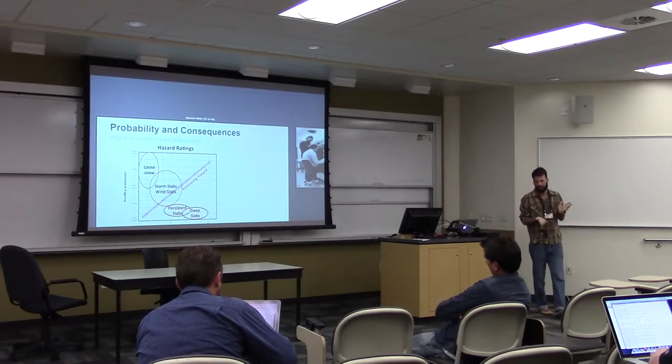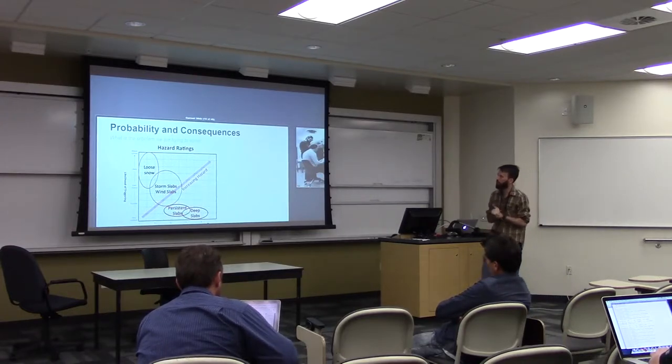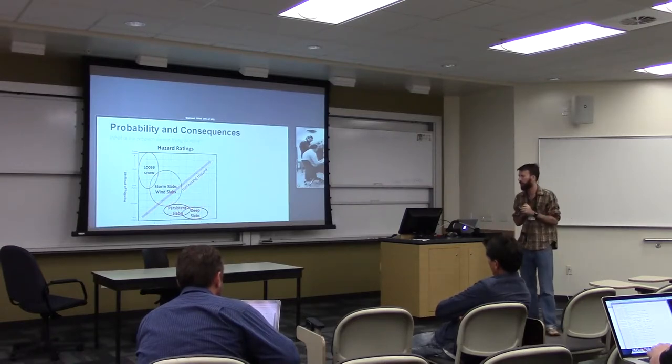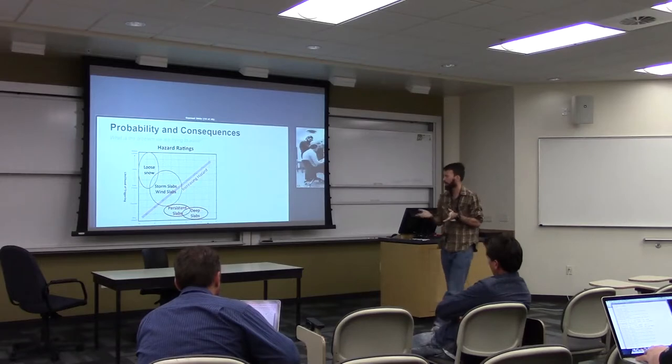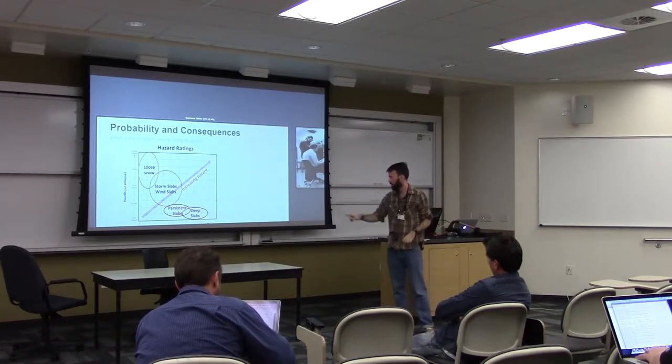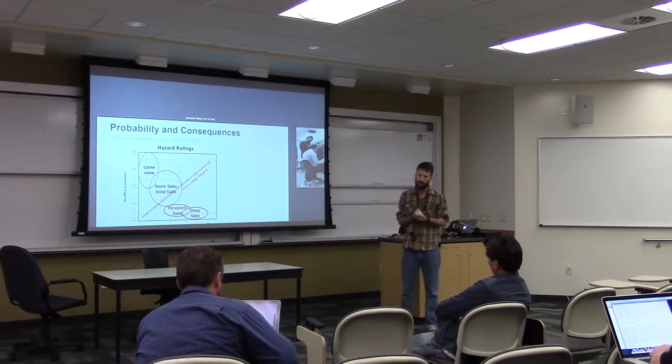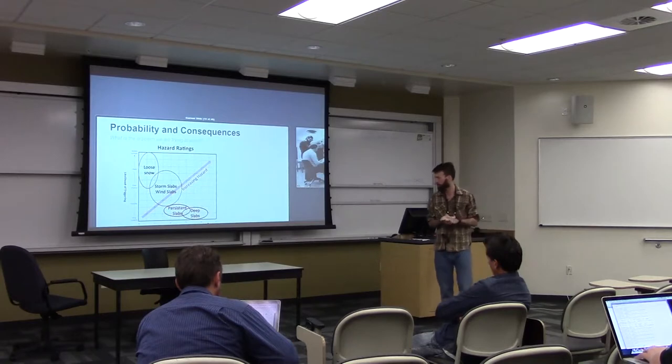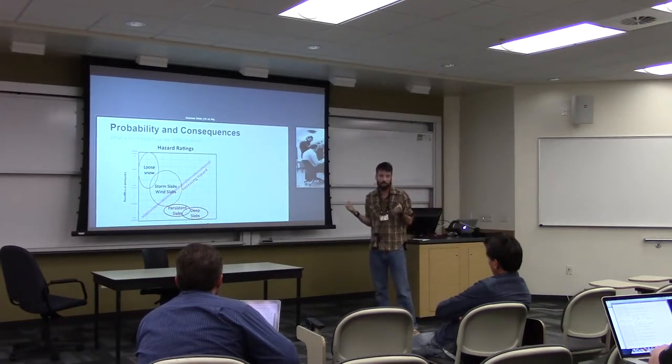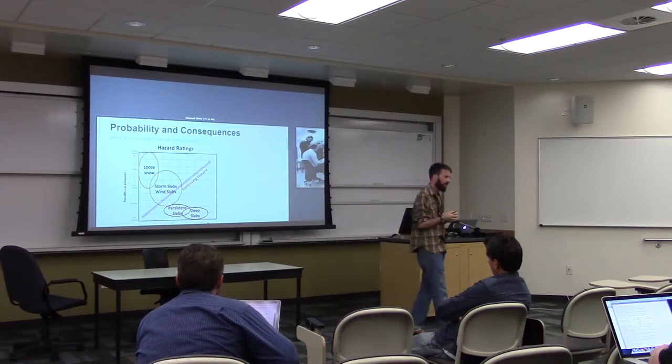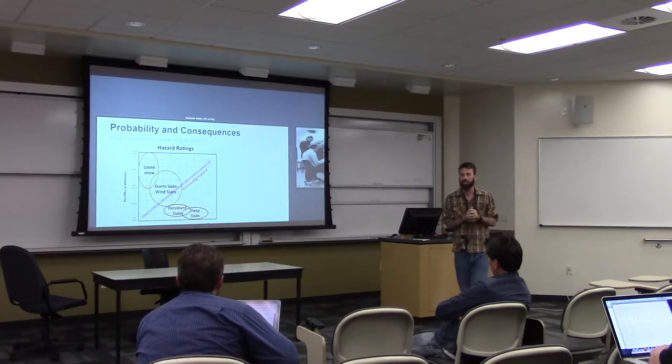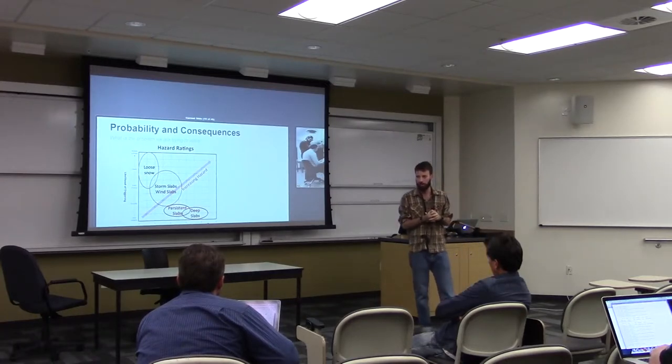In avalanche safety and modern snow science safety, one of the things that we talk about is the relationship between probability and consequences. And I think this is very important in modern operations. And basically this breaks down like this. On one vector is the probability that an avalanche will occur. On the second vector is the hazard that will occur if an avalanche does occur.